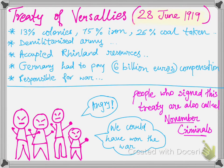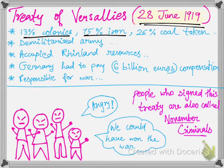On 28th June 1919, a treaty was signed in Versailles called the Treaty of Versailles. This treaty was very harsh and very humiliating for Germany. 13% of overseas colonies, 75% of iron, and 26% of coal was taken by the Allied Powers from Germany.